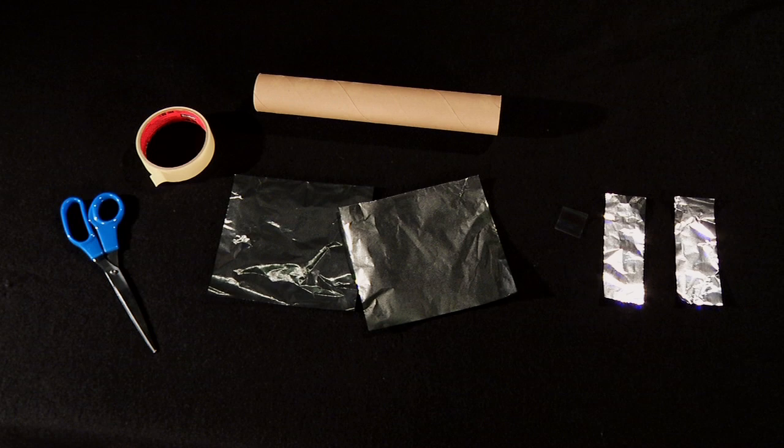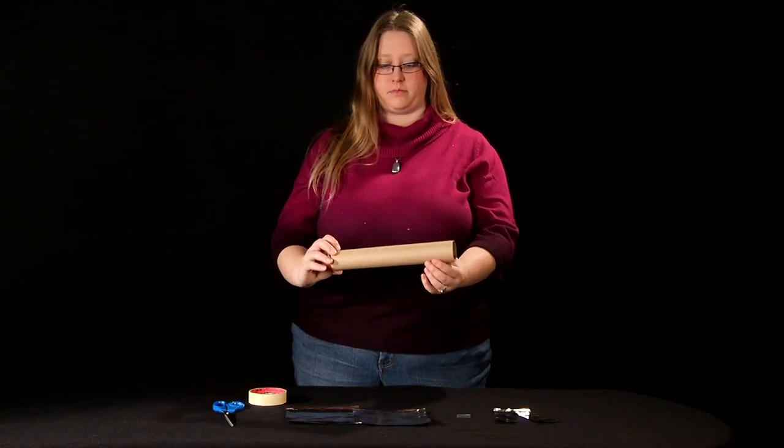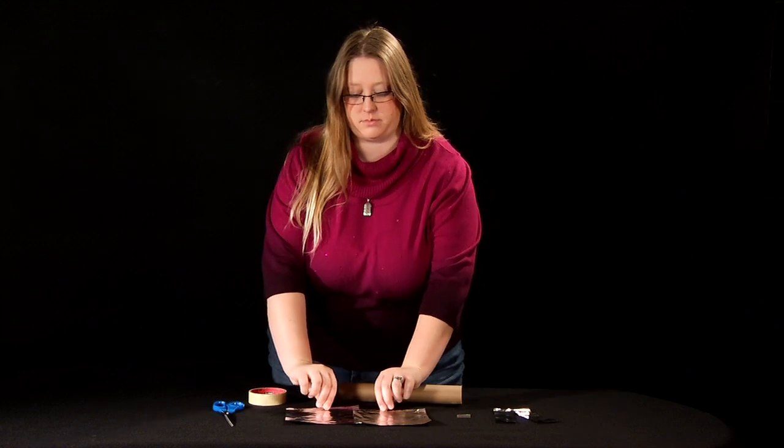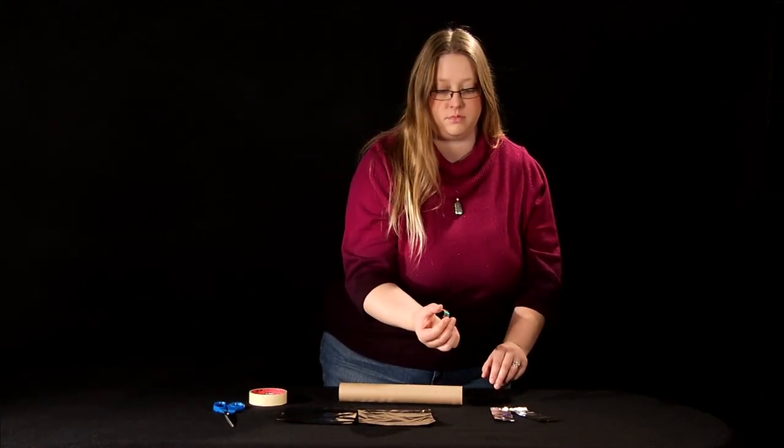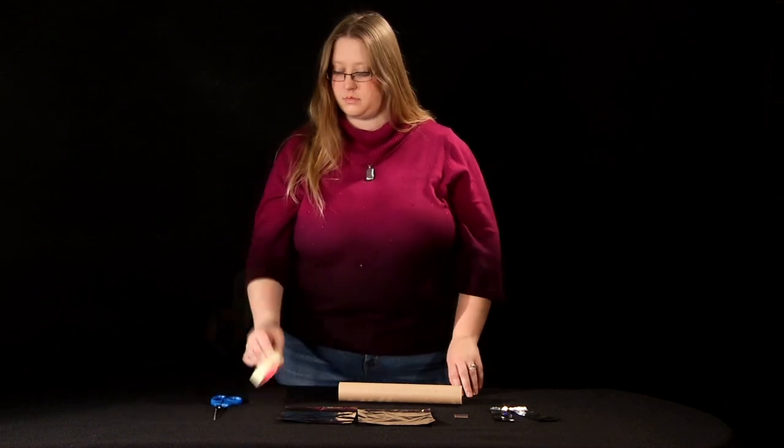For this activity I'm going to walk you through how to turn a paper towel tube into a spectroscope. You will need a paper towel tube, two roughly square pieces of aluminum foil, two strips of aluminum foil, a piece of diffraction grating, a pair of scissors, and some tape.